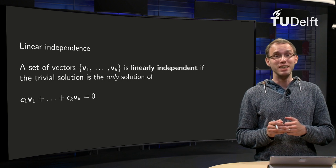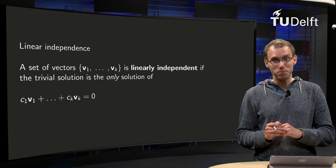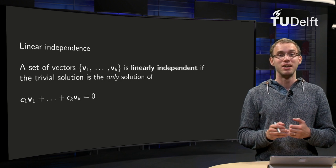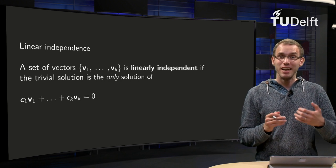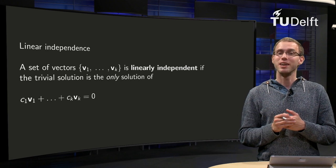For a basis we need the idea of a span, we know that one already for a general vector space. But we also need the notion of linear independence. So, how does linear independence work in a general setting? That is what you will learn in this video.